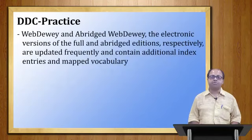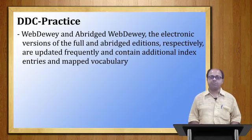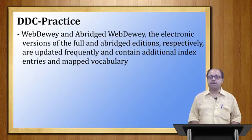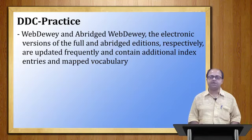WebDewey (OFDV) and abridged WebDewey are the electronic versions of the full and abridged editions respectively. They are updated frequently and contain additional index entries and mapped vocabulary. The online version of Dewey Decimal Classification, known as OFDV, is a very important tool for library professionals. The unabridged and abridged versions are available, and OFDV is regularly updated with new index entries and vocabulary mapping.